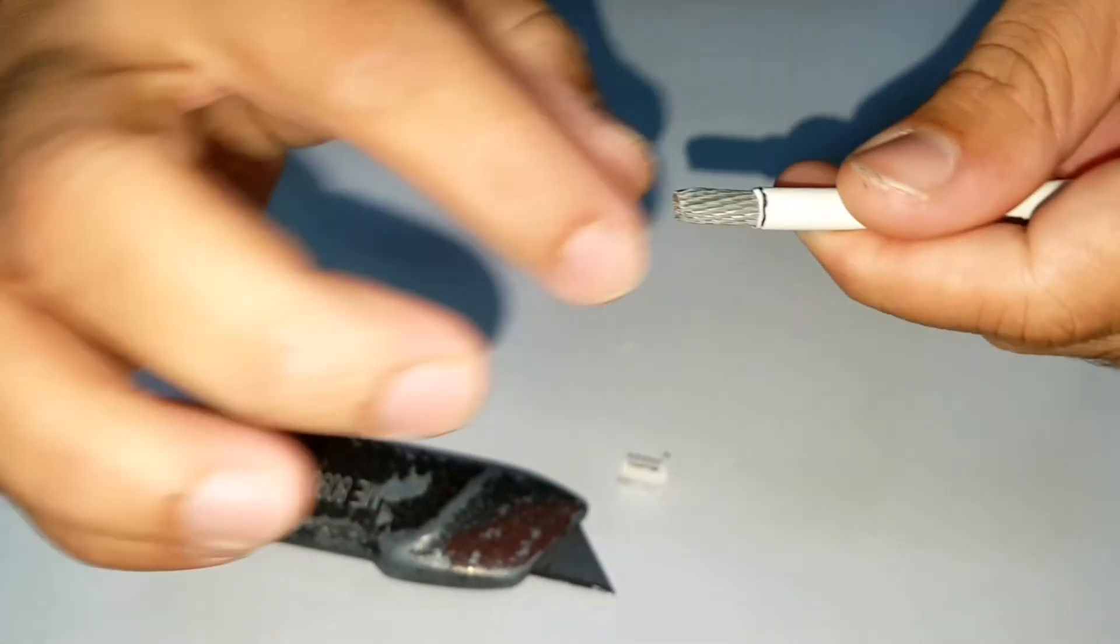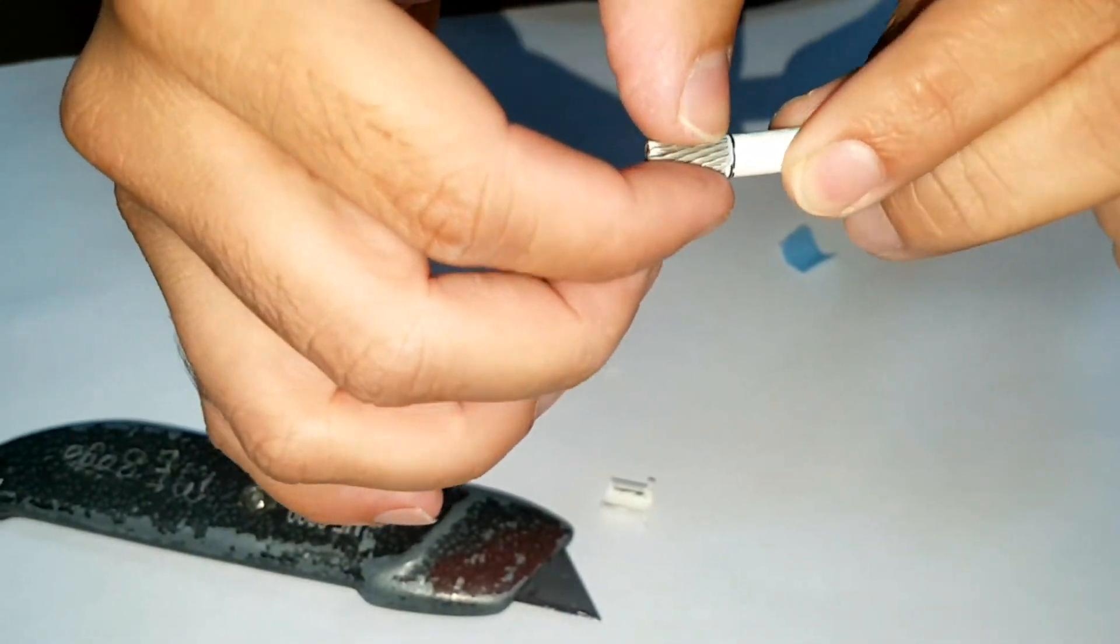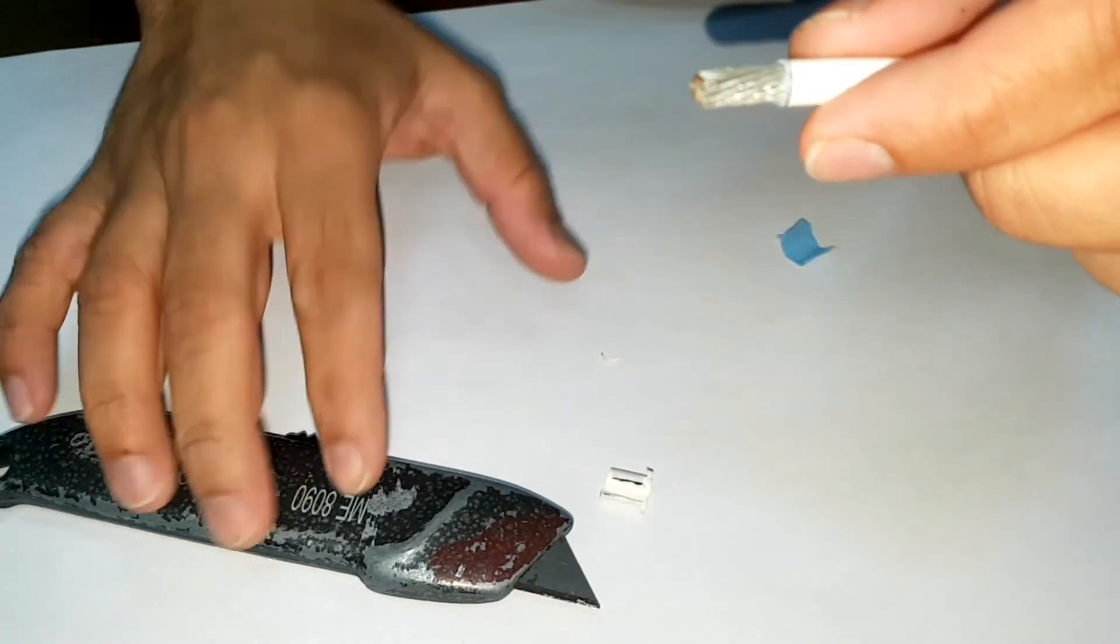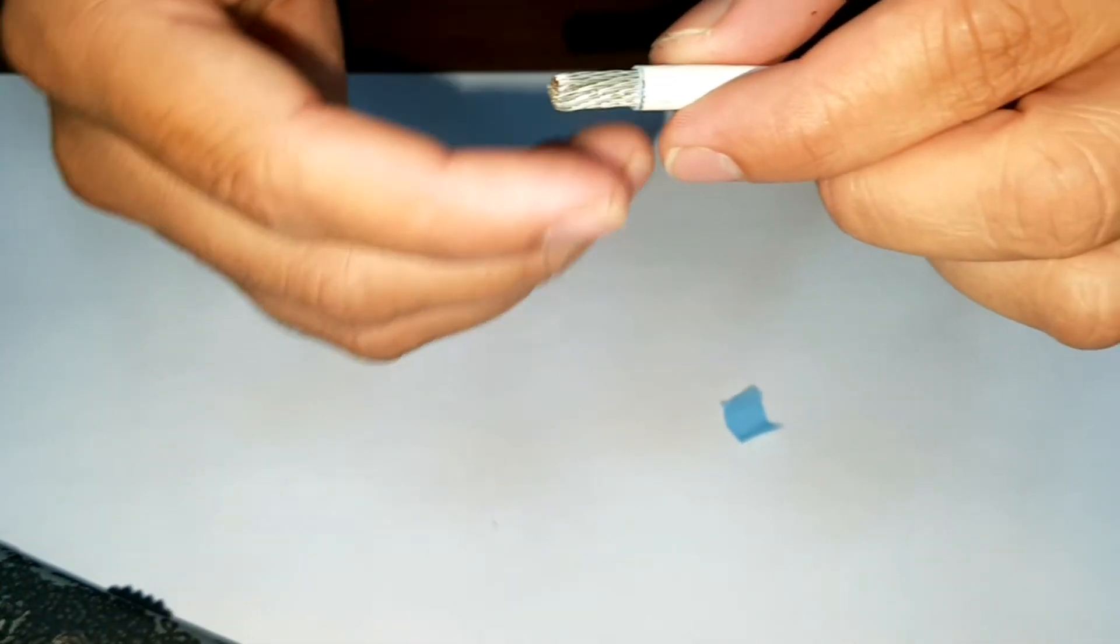Just see if the strands are okay. You should not cut any strand and you get a clear cut. So this wire is ready for crimping on the lug or the pin, whatever.